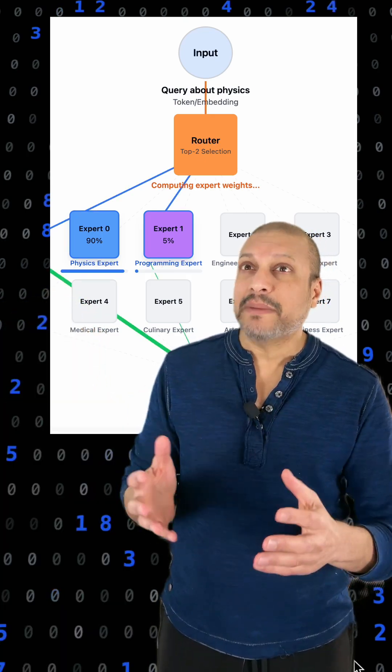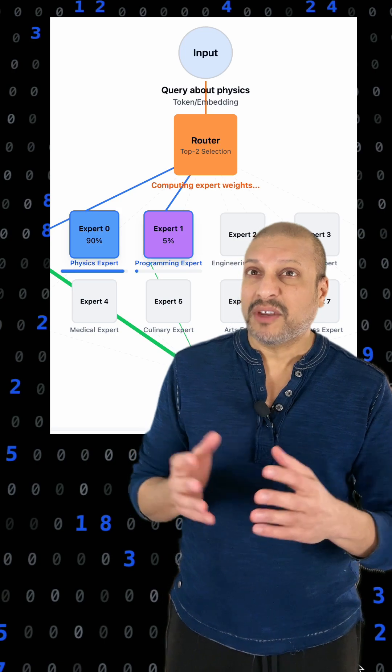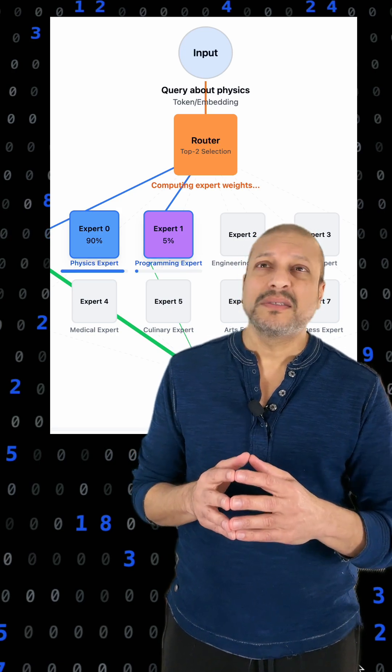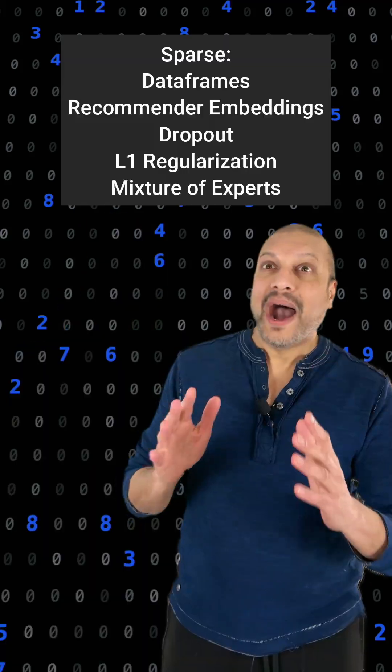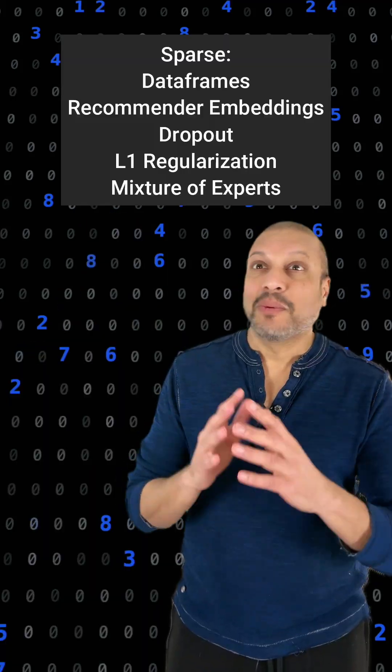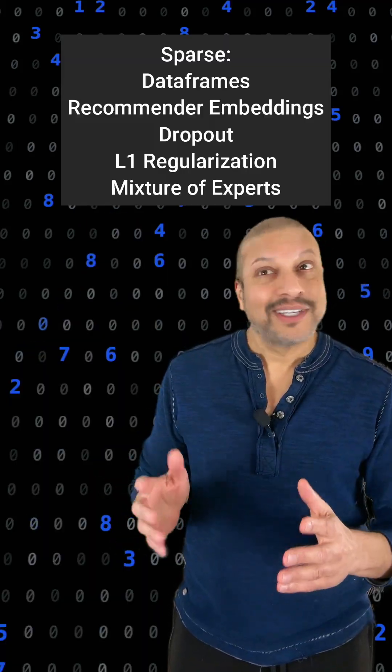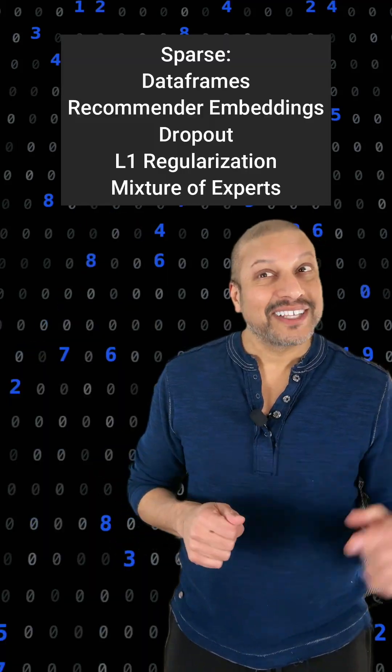So the model itself becomes sparse during inference? So smart. Precisely — saving an enormous amount of compute while still keeping that performance up. Wow. For someone so sparse, you sure do have a lot of uses.